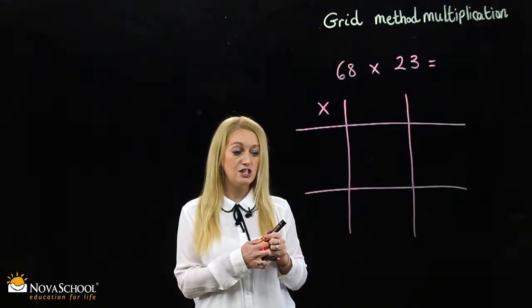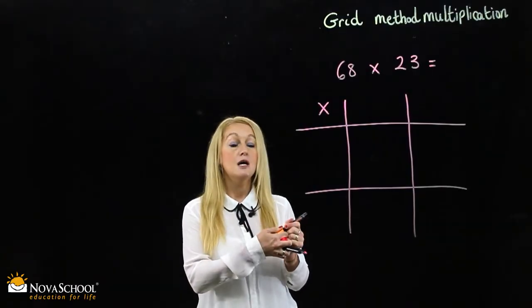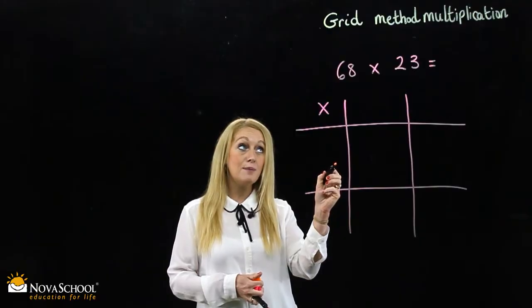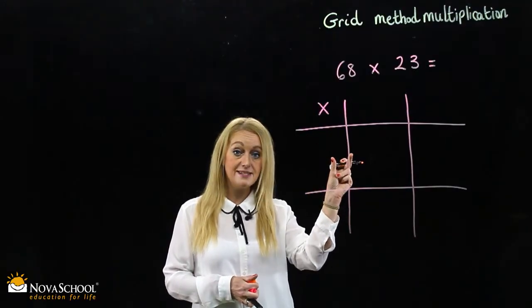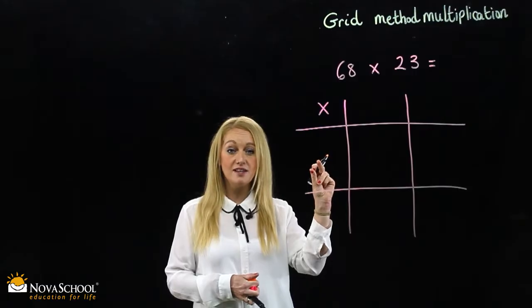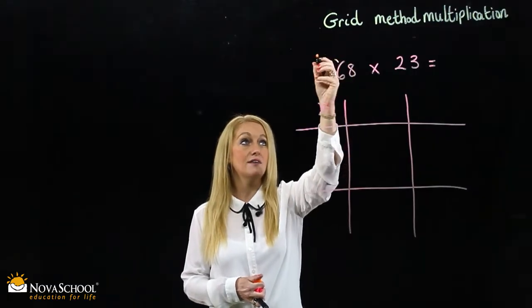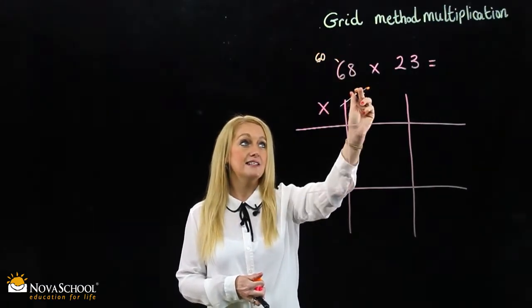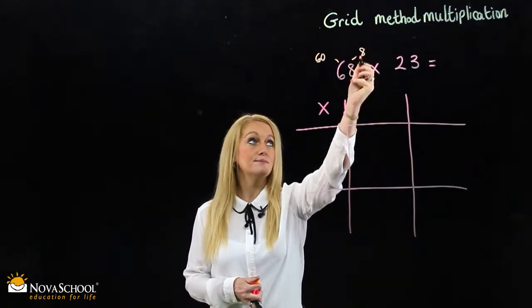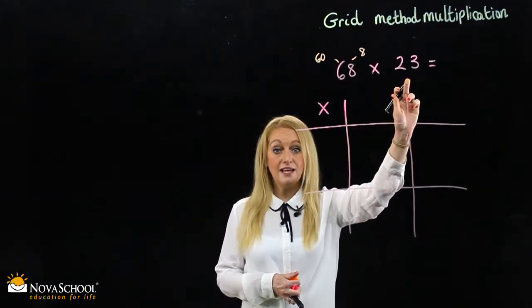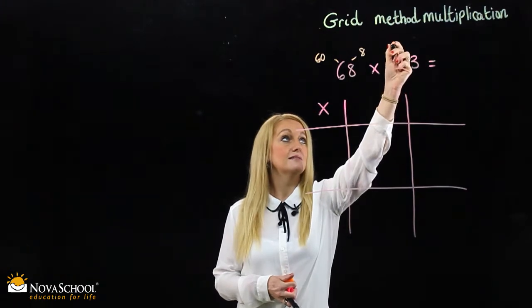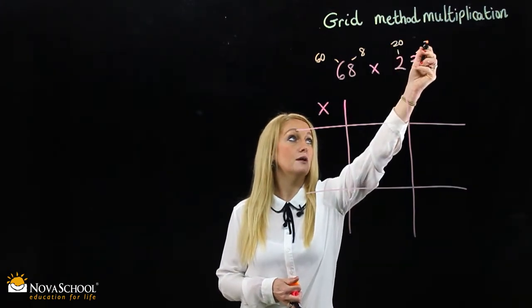We partition. Partitioning is where we separate the two-digit numbers into tens and ones. So here we have 60 and here we have 8. 23, we have two tens, 20, and we have 3 ones.